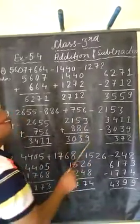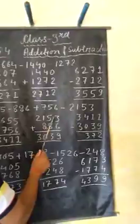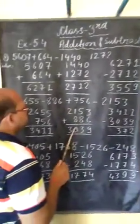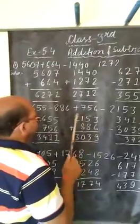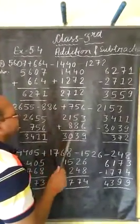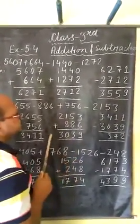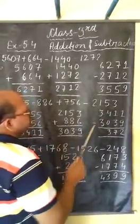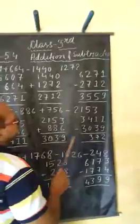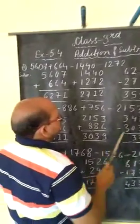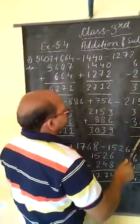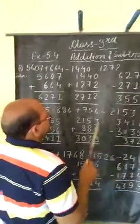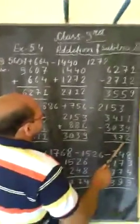Then we add the negative numbers 2153 and 886. Then we get 3039. After adding the positive and negative numbers, at last we subtract negative number from positive number 3411 minus 3039 and after subtracting we get 372. It's our final answer.